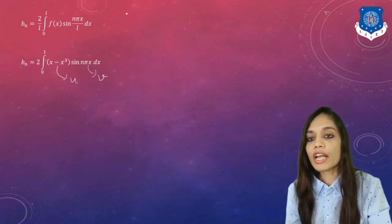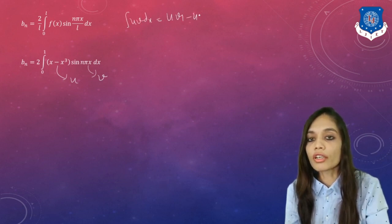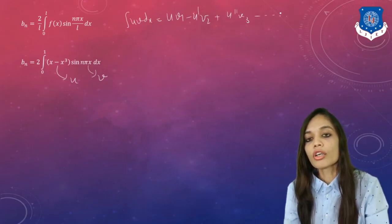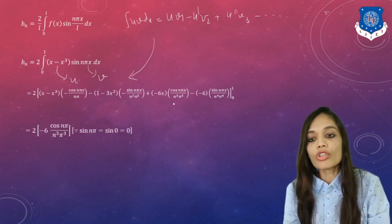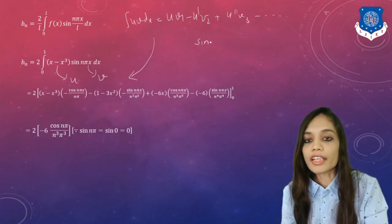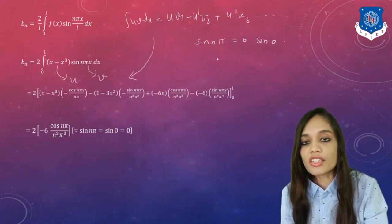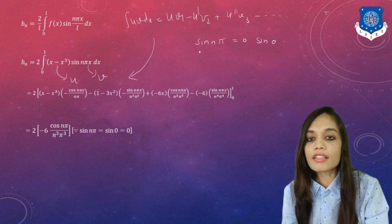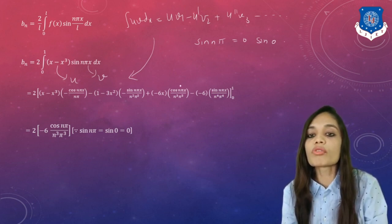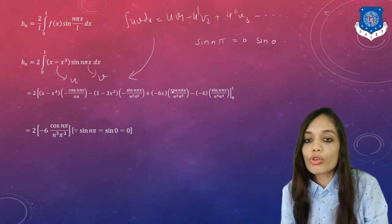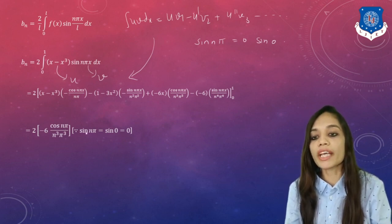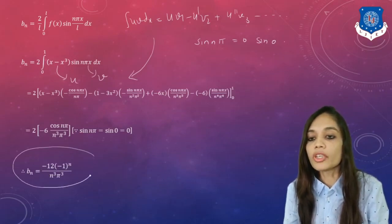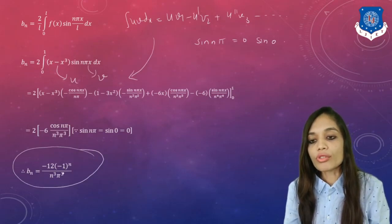We solve this using the Leibniz rule: ∫uv dx = u·v₁ − u'·v₂ + u''·v₃ − ···, with u = (x − x³) and v = sin(nπx). Applying the rule and substituting limits x = 1 and x = 0: sin(nπ) = 0 and sin(0) = 0, so those terms are neglected. Only the cos(nπ) terms survive when x = 1, giving cos(nπ) = (−1)ⁿ. Therefore Bn = −12·(−1)ⁿ/(n³π³).